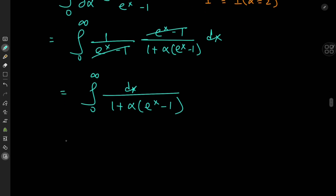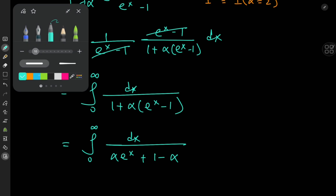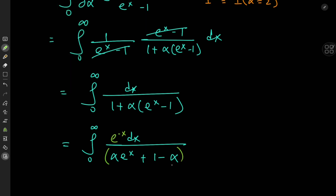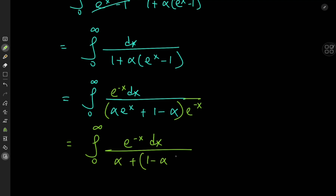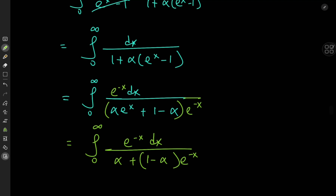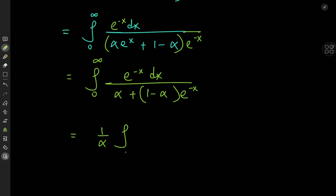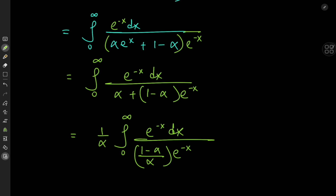Now we expand the denominator. We have the integral from zero to infinity of dx divided by alpha times e to the x plus one minus alpha. We expand further using e to the negative x, since that will help with infinite series expansions later. So we have the integral from zero to infinity of e to the negative x dx divided by alpha plus one minus alpha times e to the negative x. Factoring out alpha gives one over alpha times the integral from zero to infinity of e to the negative x dx divided by one minus alpha over alpha times e to the negative x plus one.